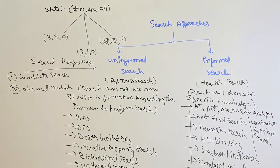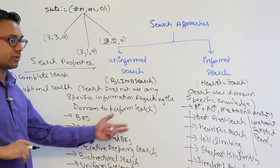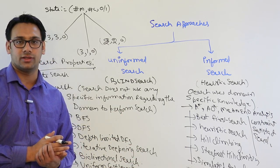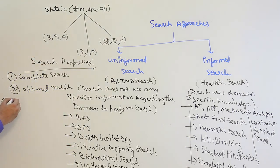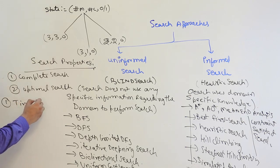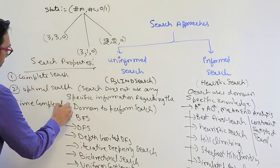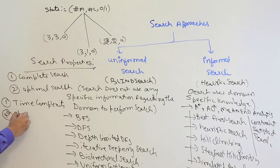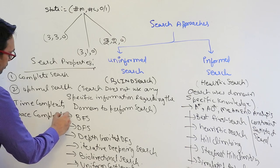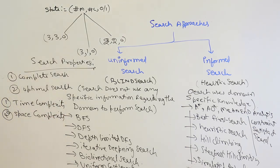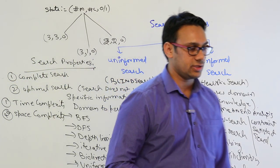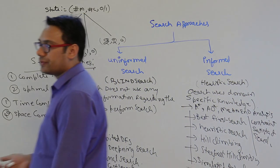Before that, we should understand what the search properties are. The first search property is complete search — a search is complete if it always gives a solution when the solution does exist. The second is optimal search, also called admissible search — it gives the optimal solution for that particular problem.